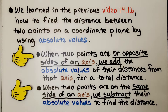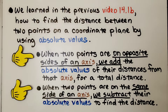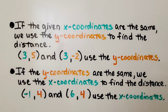When two points are on opposite sides of an axis, we add the absolute values of their distances from that axis for a total distance. And when two points are on the same side of an axis, we subtract their absolute values to find the distance. If the given x-coordinates are the same, we use the y-coordinates to find the distance.